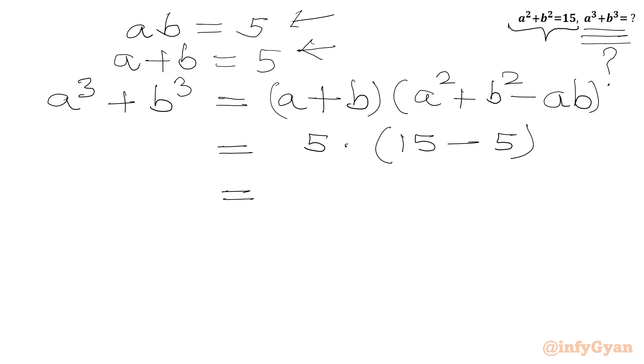So we can write this equals 5 times (15 minus 5 is 10). So this result will come out 50. Our required expression a³ plus b³ equals 50. This is our final answer.